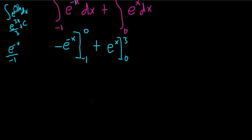All right, so we plug in the 0 first. So we get negative e to the 0, and then it's minus negative e to the negative 1. So it's going to become a 1 here, because it's negative and negative. Plus, we plug in the 3 first. So it's e cubed minus e to the 0.